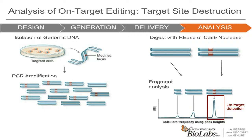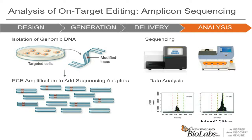Another more precise method would be amplicon sequencing using high-fidelity polymerases and next-generation sequencing, such as using our Q5 polymerases. This is more costly and time-consuming, but can give you precise analysis of edits. Q5 polymerase has a more uniform amplification across a wider range of base compositions and the lowest error rate of any commercially available DNA polymerase.